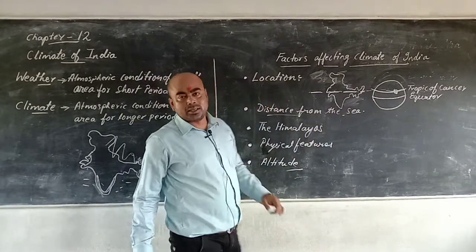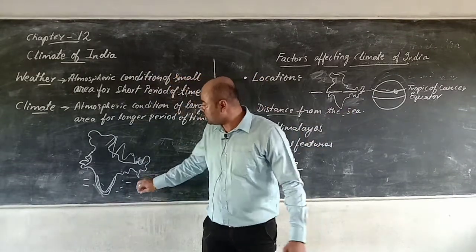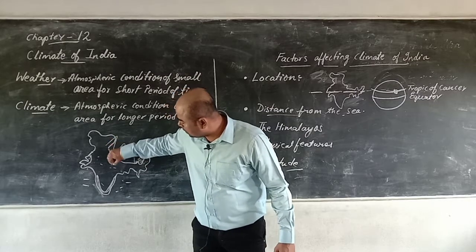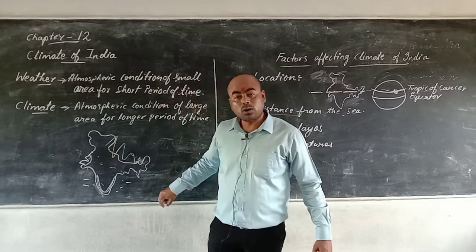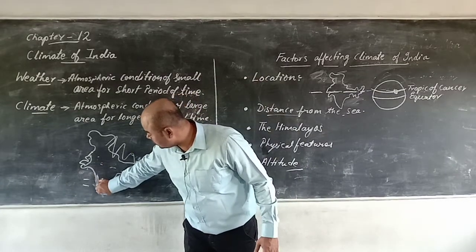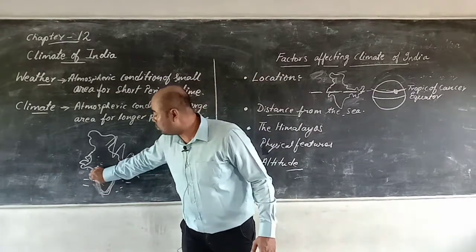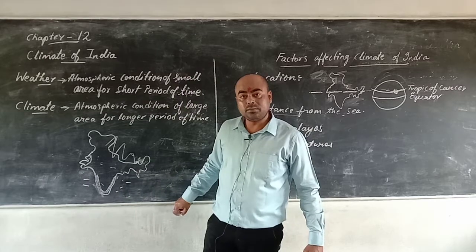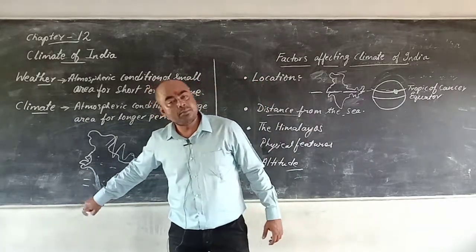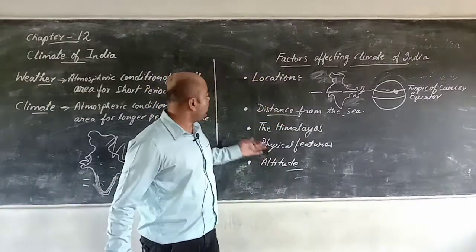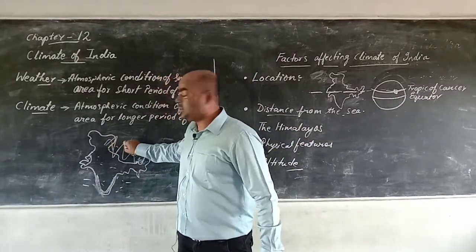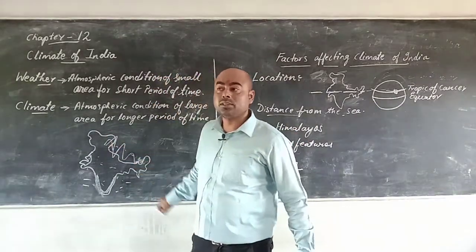Next is distance from the sea. Places in the interior of the continent, like Delhi, Uttar Pradesh, and Bihar, are not touching the sea's border. But coastal areas which are touching the sea will have a moderating influence from the sea, because of land breeze and sea breeze.